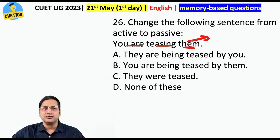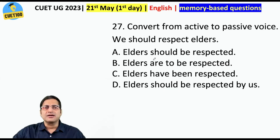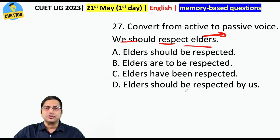'Them' is the object here, so it becomes the subject 'they.' One option with 'they' is incomplete — 'they were teased' — by whom? So the correct answer is 'they are being teased by you.' Next: 'We should respect elders.' The object is 'elders,' so it should start with 'elders.' Answer: 'Elders should be respected by us.'